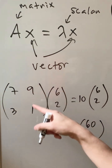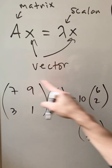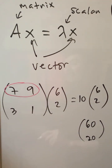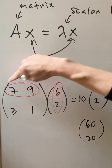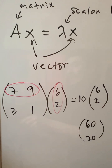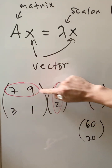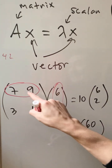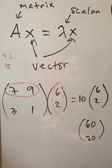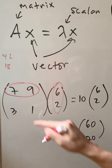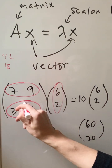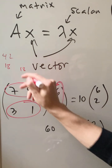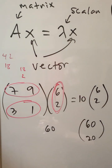Now let's play on the matrix side — this is a little more complicated. What you do is focus on the top row and this column. We go 7 times 6, and 9 times 2, and add those together. 7 times 6 is 42, and 9 times 2 is 18; 42 plus 18 is 60. Now we focus on the second row with the same column: 3 times 6 is 18, 1 times 2 is 2, add them together — that's 20.